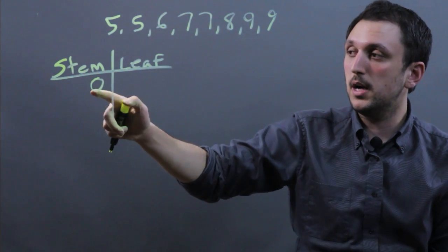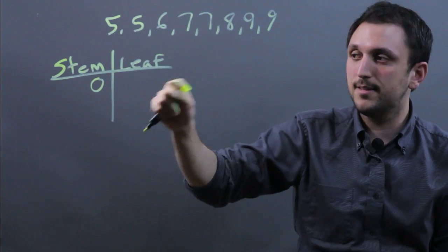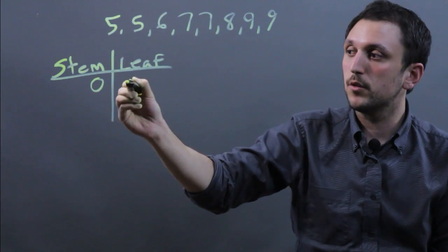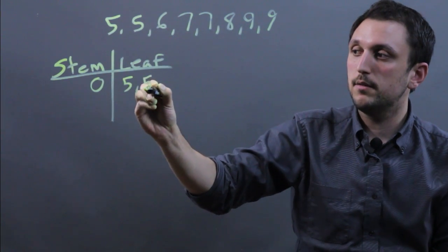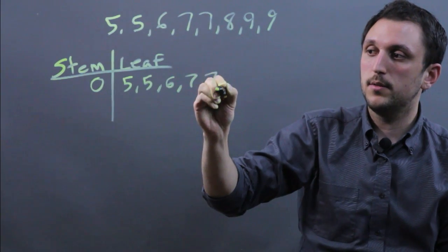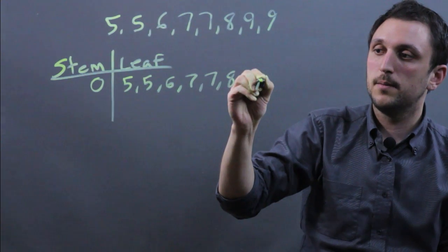When we want to put this into a stem and leaf plot, we are actually just going to rewrite the exact same set in the leaf. So we'd say 5, 5, 6, 7, 7, 8, 9, 9.